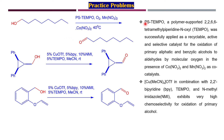TEMPO can also be adsorbed on a polymer, giving what we call polymer-supported TEMPO. This can be used as a recyclable catalyst for the active and selective oxidation of primary aliphatic and benzylic alcohols to aldehydes by molecular oxygen in presence of cobalt or manganese nitrate as co-catalysts. For a simple aliphatic alcohol, polymer-supported TEMPO with oxygen, manganese nitrate, and cobalt nitrate at mild temperature converts the substrate to the aldehyde.